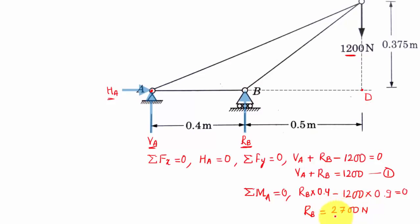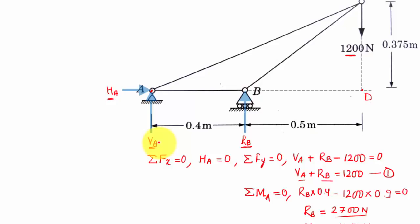Putting RB equal to 2700 Newtons into equation one, we get VA equal to negative 1500 Newtons. So now we have all the reactions: HA equals zero, VA equals negative 1500 Newtons, and RB equals 2700 Newtons. Tip number one has been implemented successfully — the reactions at supports A and B have been computed.